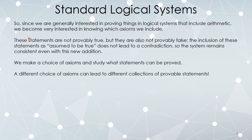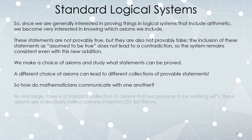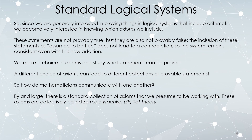So how do we communicate with one another if there are different choices of axioms that lead to different things? By and large, there's a standard collection we all pretty much agree on, called the Zermelo-Frankel axioms of set theory, frequently abbreviated as ZF. In the next chapter, we're going to be discussing set theory, specifically the axioms of Zermelo-Frankel set theory.